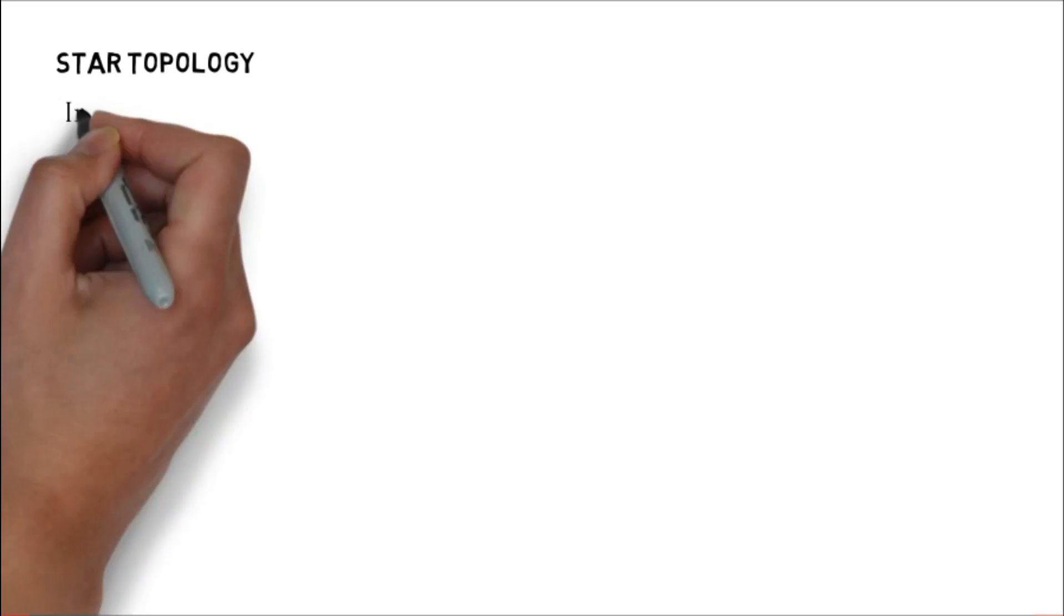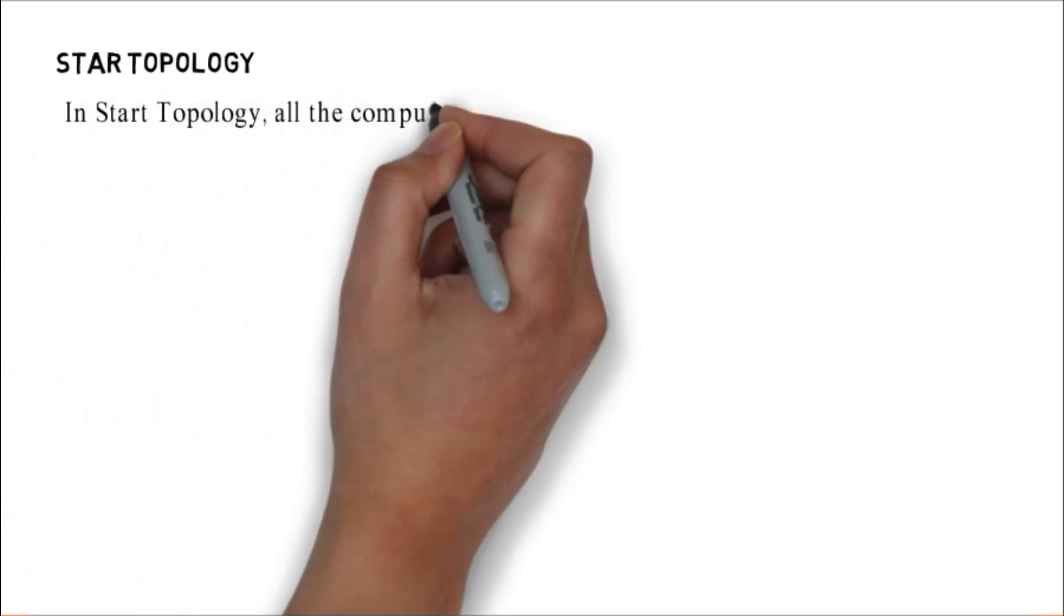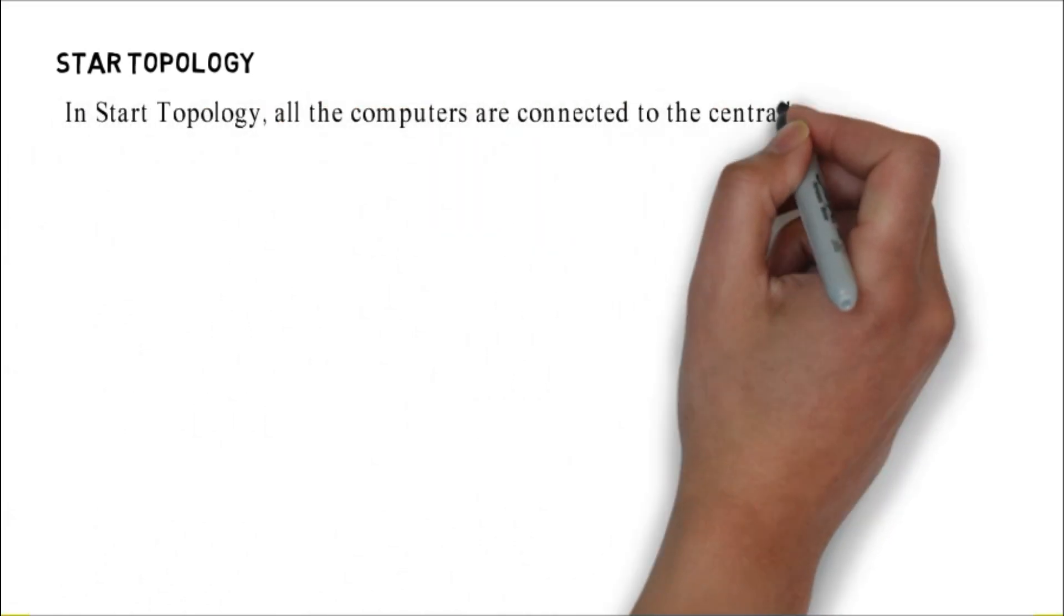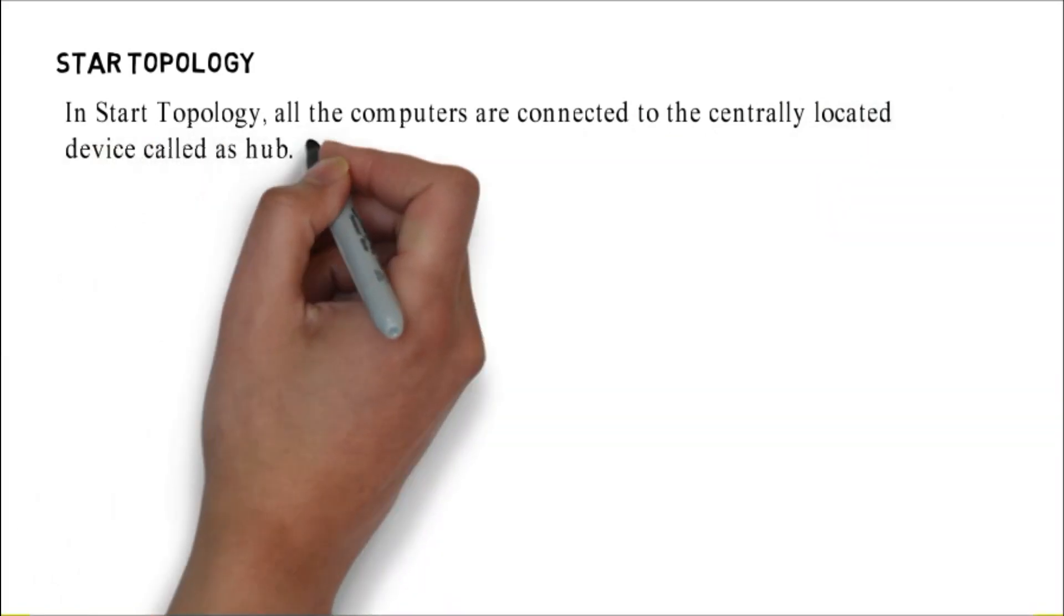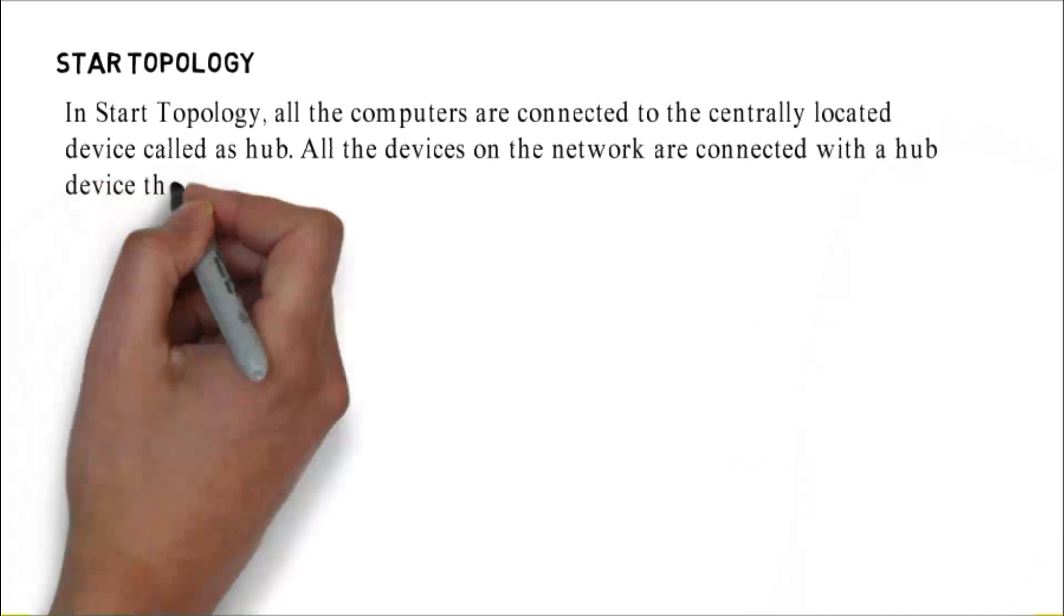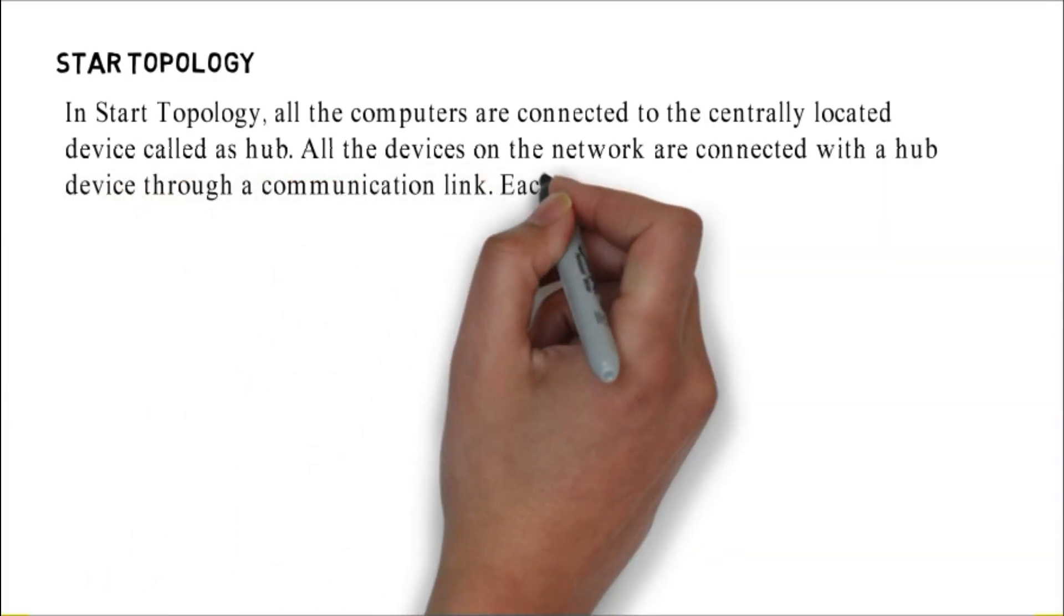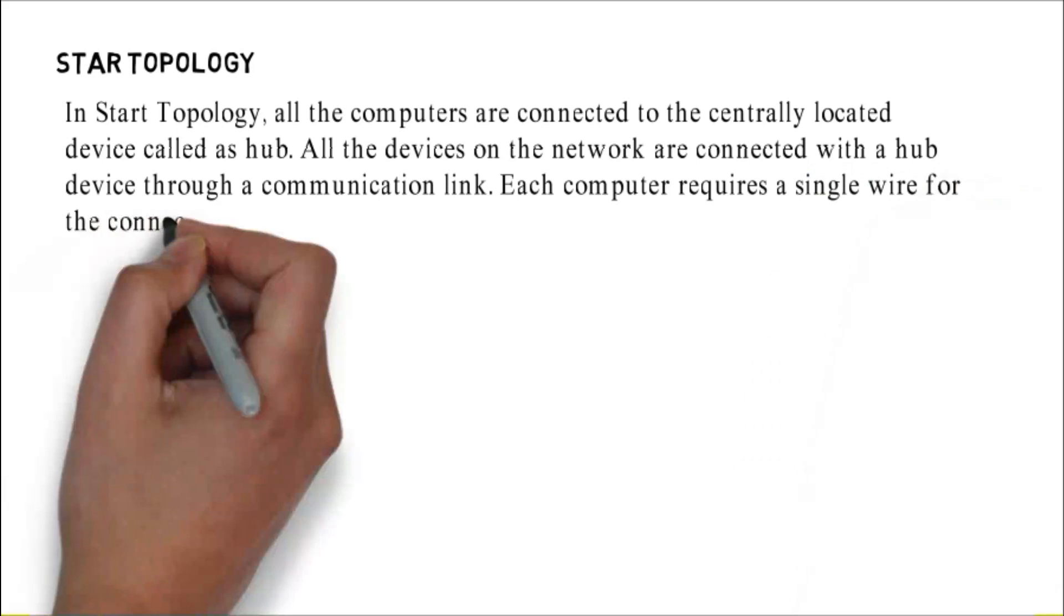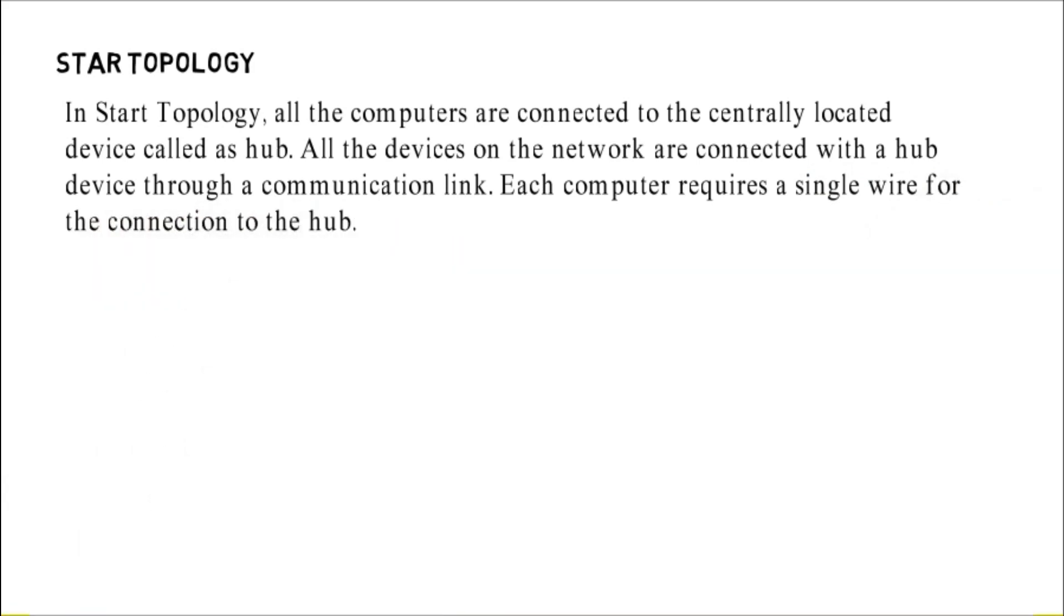Star topology. In star topology, all the computers are connected to the centrally located device called hub. All the devices on the network are connected with a hub device through a communication link. Each computer requires a single wire for the connection to the hub.